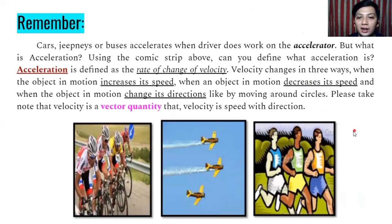It may be confusing, but they all have specific purposes. The gas pedal, brake pedal, and steering wheel are all accelerators. Always remember that in cars, jeepneys, or buses, they accelerate when the driver does work on accelerators. But what is acceleration? Using the comic strip above, we can define what acceleration is. Acceleration is defined as the rate of change of velocity. Velocity changes in three ways: when the object in motion increases its speed, decreases its speed, or changes its direction, like moving around circles. Please take note that velocity is a vector quantity, meaning number, unit, and direction. For example, 10 kilometers per hour northeast.